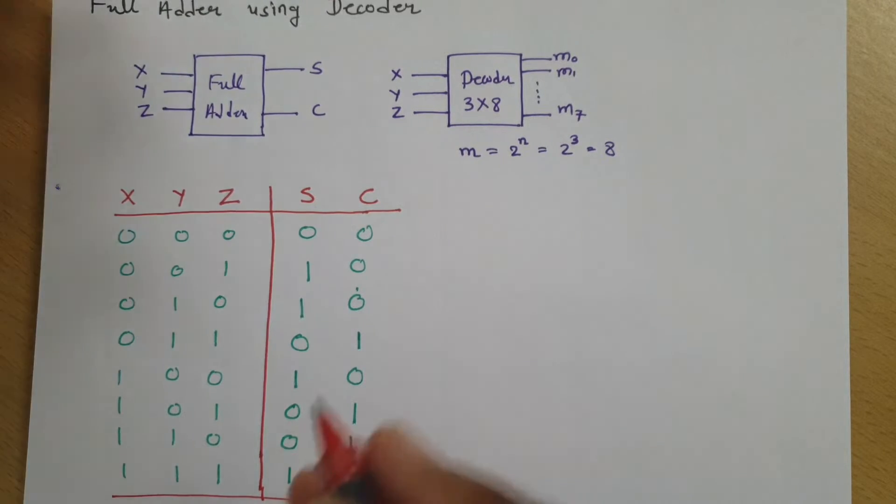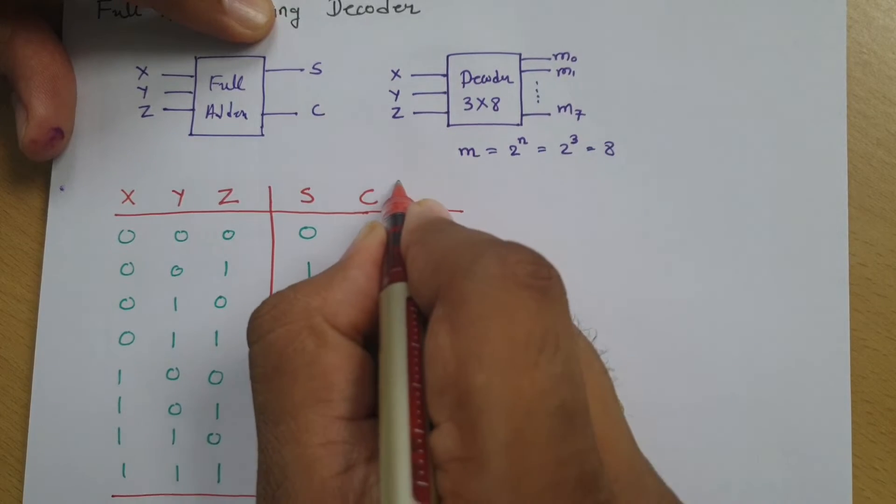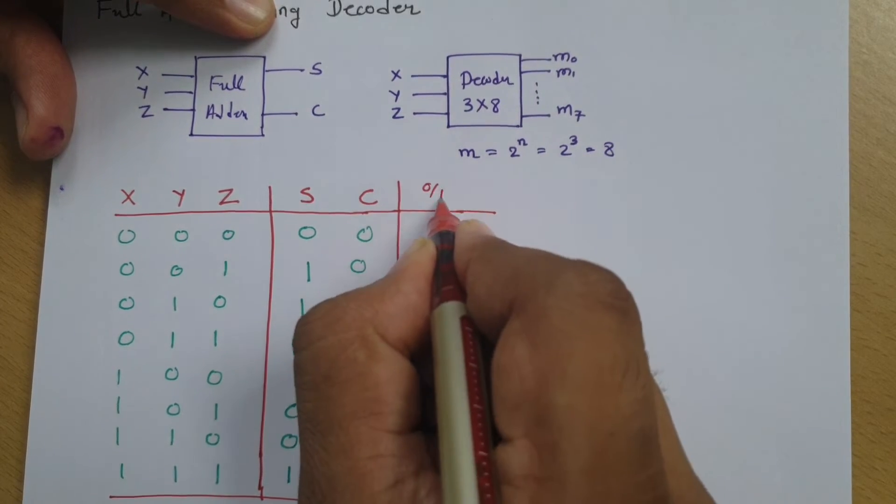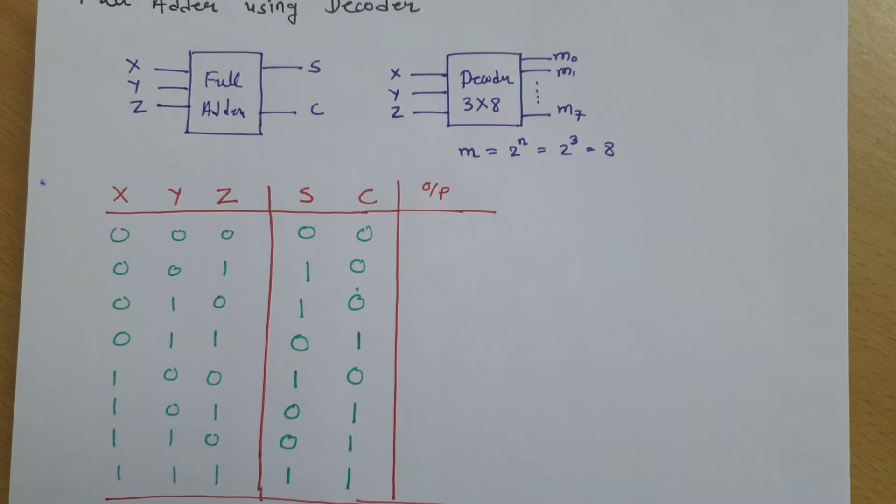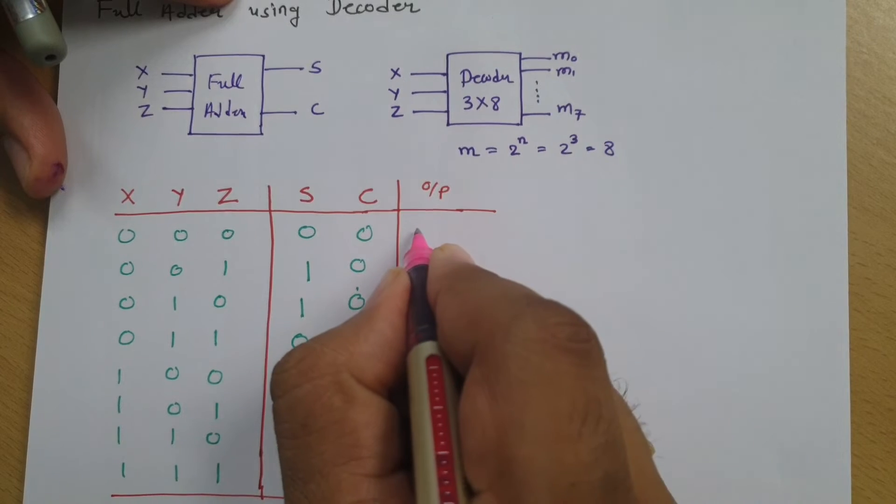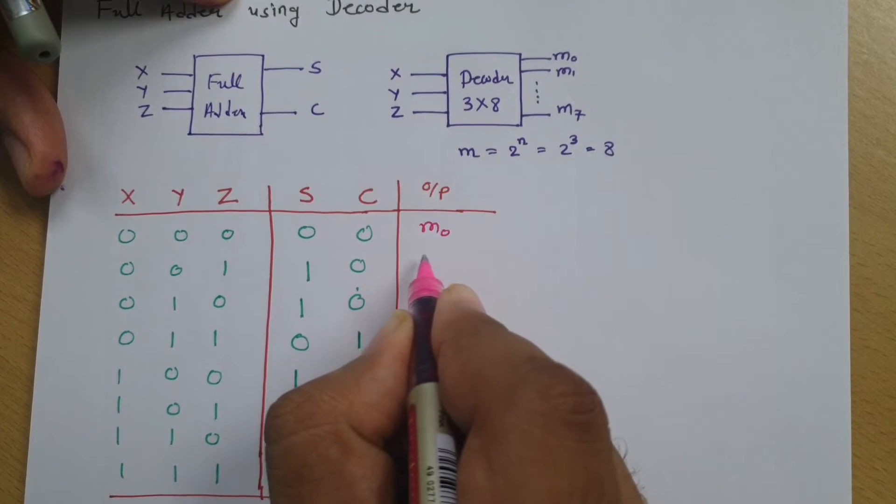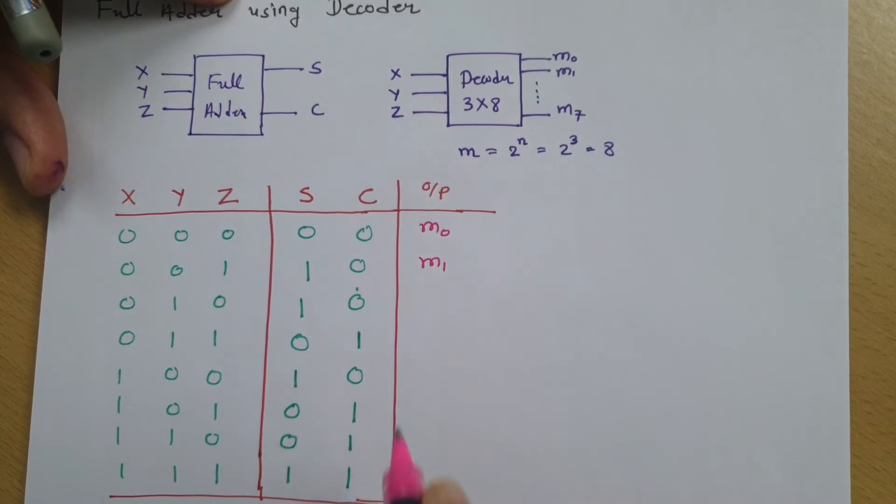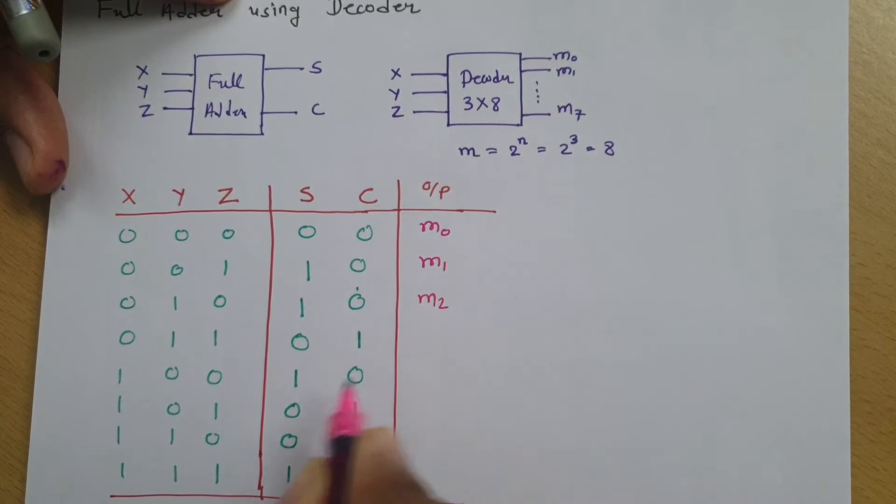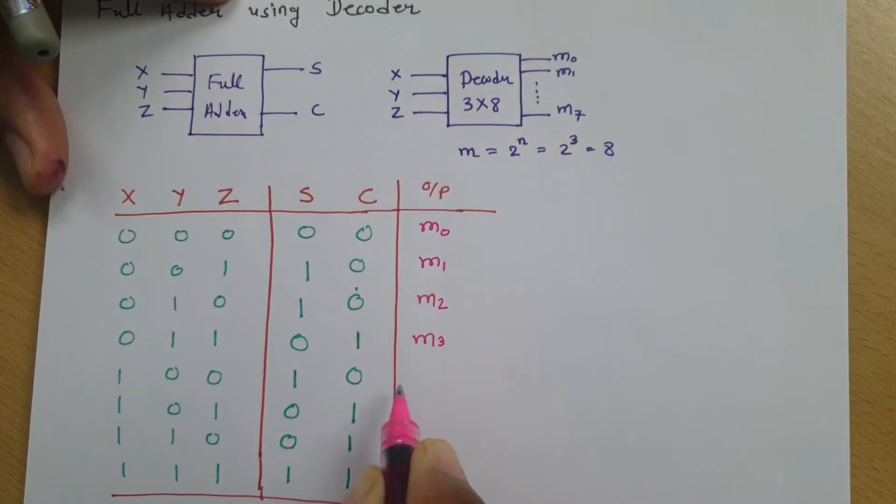With same input, if I use decoder, then you will be finding which output terminal gets selected. For 0,0,0, M0 will get selected. For 0,0,1, M1 will get selected. For 0,1,0, M2 will get selected. For 0,1,1, M3 will get selected.